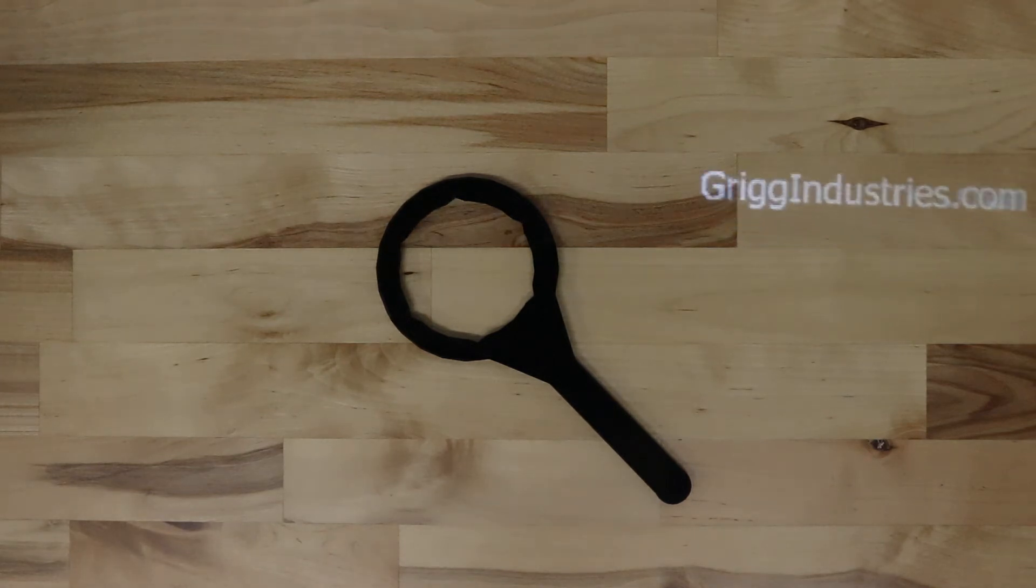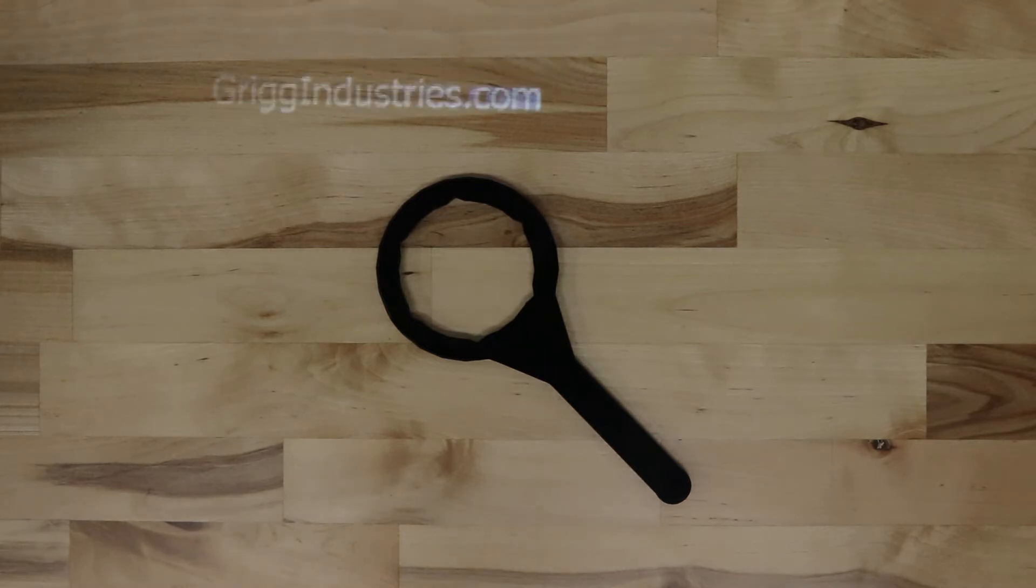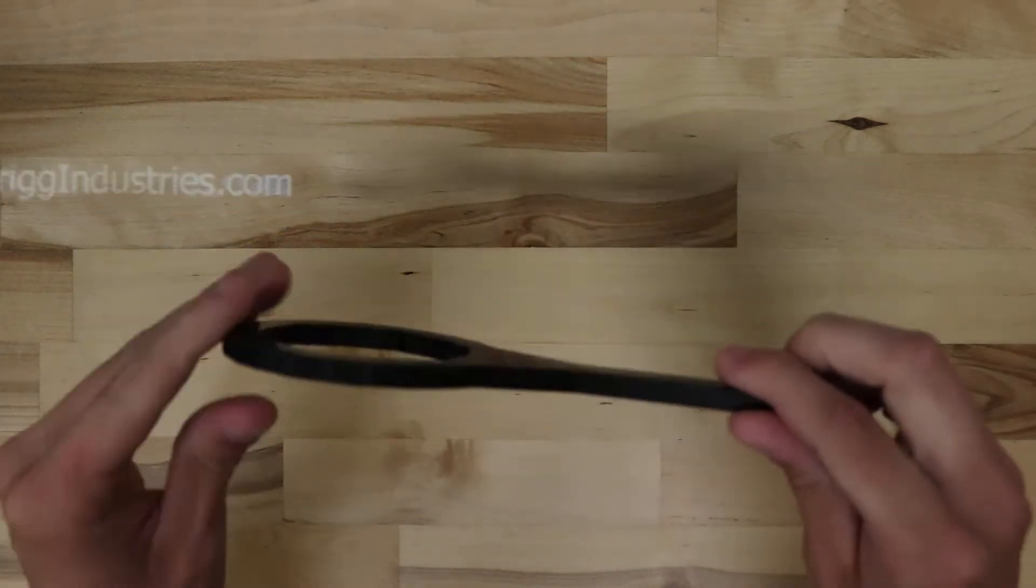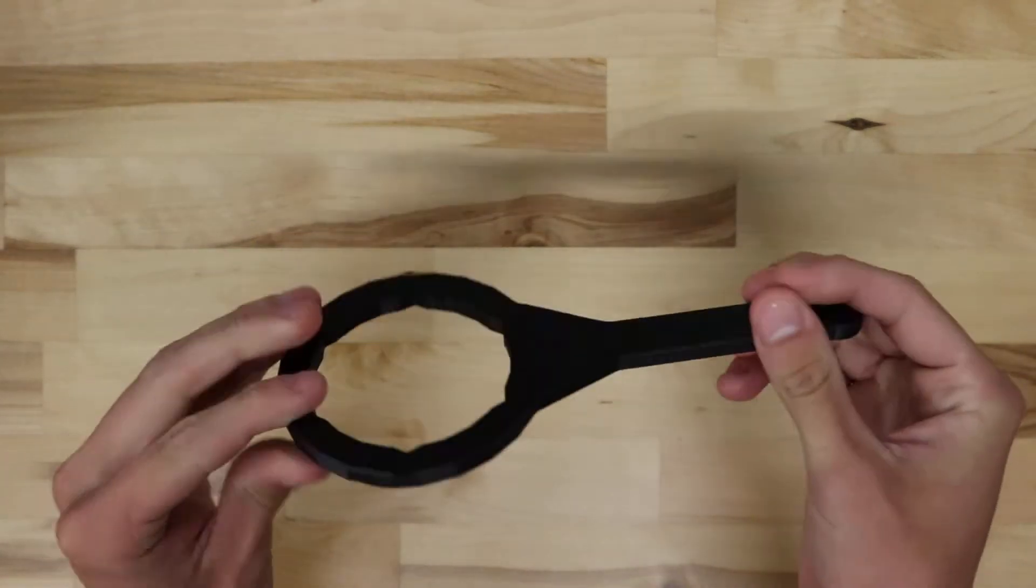This is a look at the wrench to fit the Mansfield flush valves. This wrench is plastic. It is a stronger plastic.